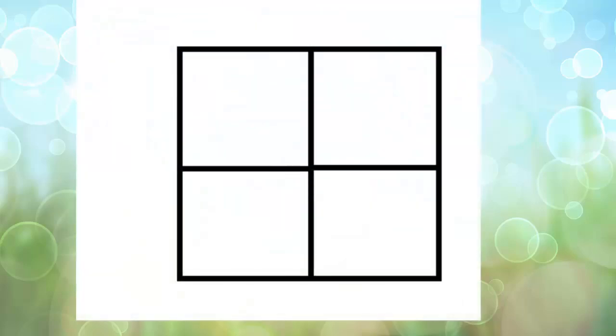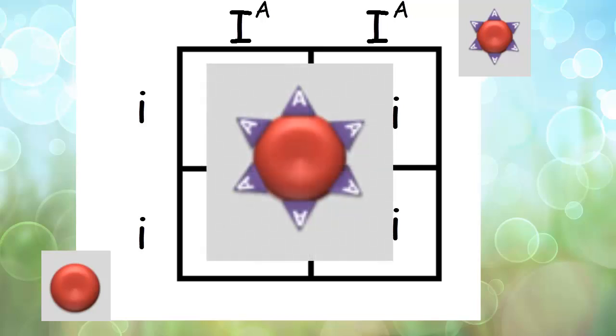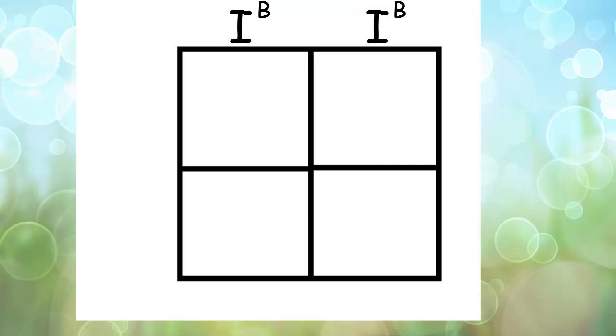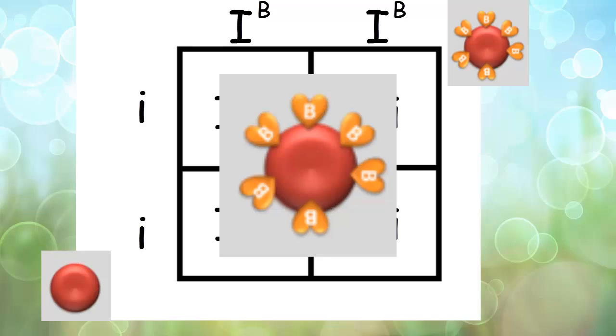Now let's say we cross our homozygous blood type A, our I superscript A, I superscript A, with our O, which is two lowercase i. What we're going to get is IA little i. And so that's going to be our heterozygous for blood type A. Still blood type A, but there's the possibility of having offspring with blood type O now. Same with if you cross a blood type B homozygous with a blood type O, you're going to get the same outcome as you did before. You're going to have your IB little i, which is your heterozygous B, again, with the potential of passing down O blood to your offspring because you carry the O allele.